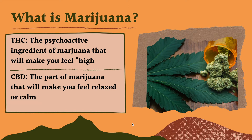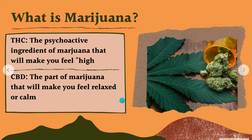There are a couple of key ingredients that make up marijuana. One of those chemicals is called THC. THC is the psychoactive ingredient in marijuana — that's the ingredient that's going to make you feel high. The other ingredient is called CBD. That's the part of marijuana that will make you feel relaxed, calm, or even a little bit sleepy.